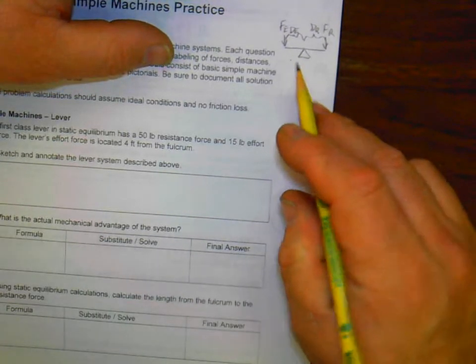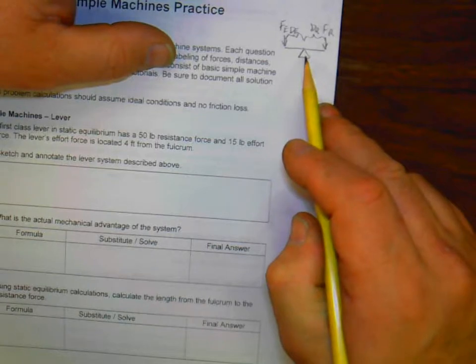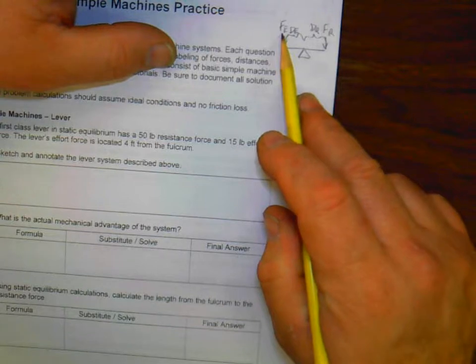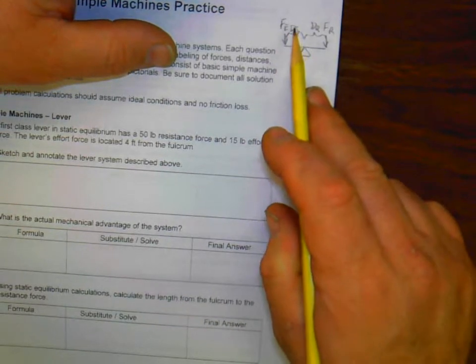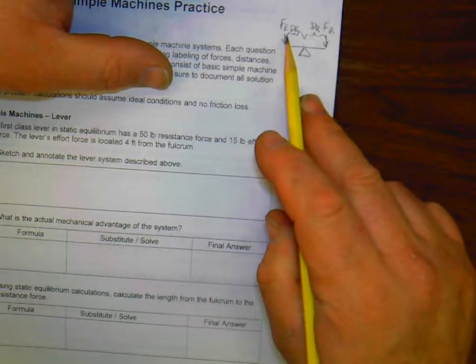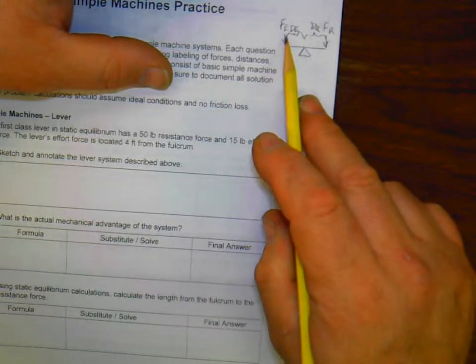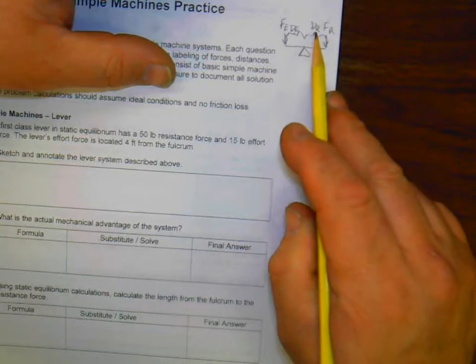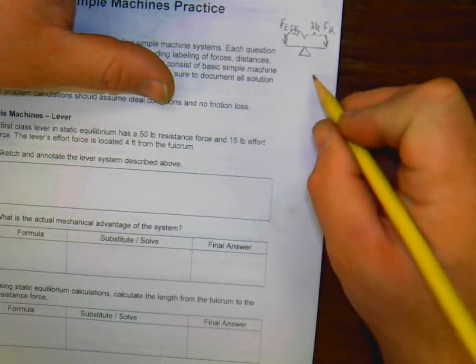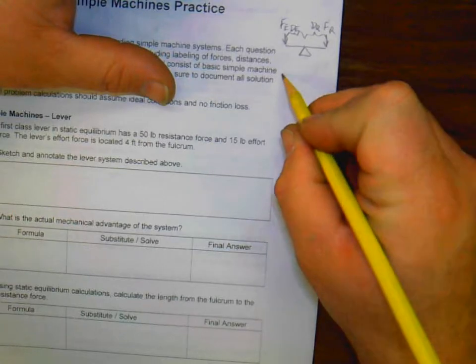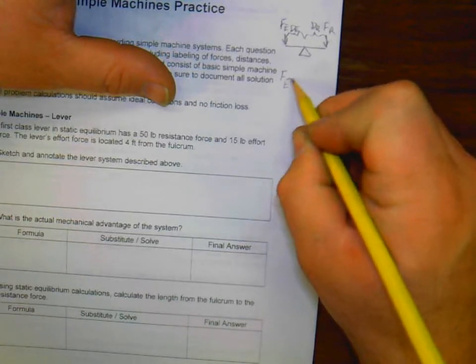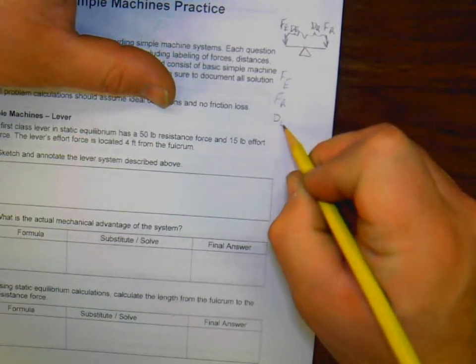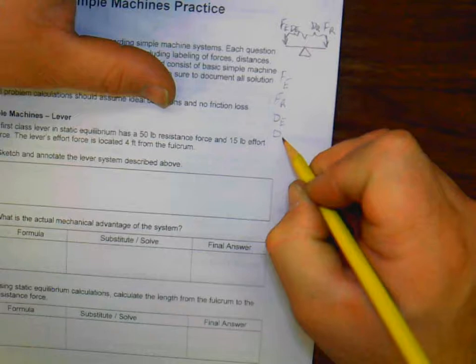We've got a force of an effort and a distance of an effort, which the distance of the effort is the distance from the force applied at 90 degrees to the fulcrum. And then we've got our distance. So on all of these, we're going to write these variables out. So we should have force of effort, force of resistance, distance of effort, and distance of resistance.